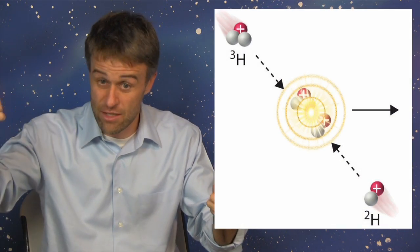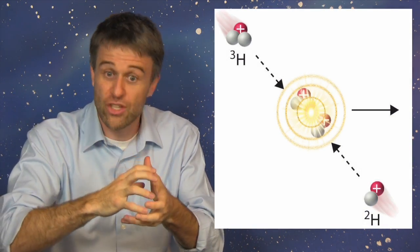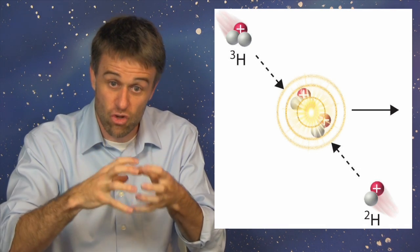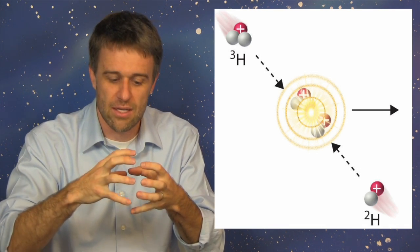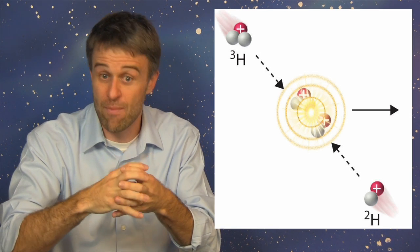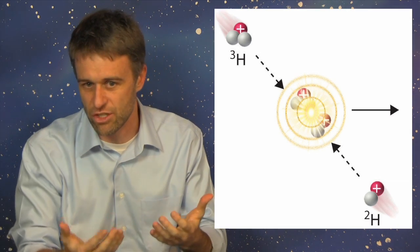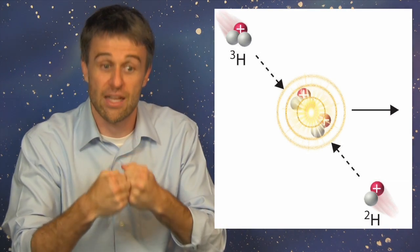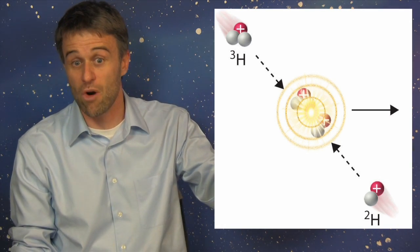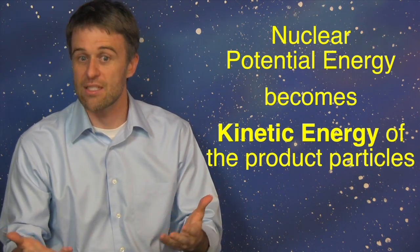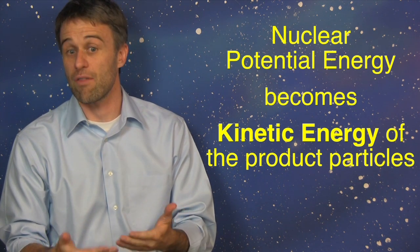As the reactant nuclei are forced together, they can eventually get close enough that they overcome their electric repulsion, and the strong nuclear force is sufficient to overcome that repulsion, and it binds them very tightly together. This loss of the nuclear potential energy is then converted into the kinetic energy of the product particles. So the net result is the nuclear potential energy of the reactants gets converted into kinetic energy of the products.